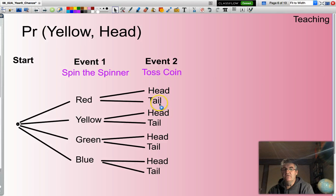And that sequence is followed all the way through from spinning the spinner and landing on a blue, followed by tossing the coin and landing on a tail.